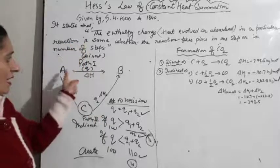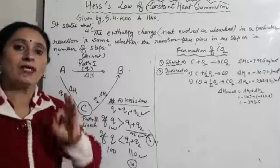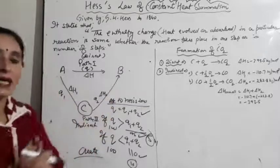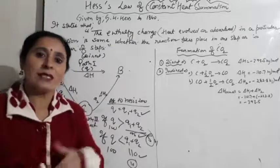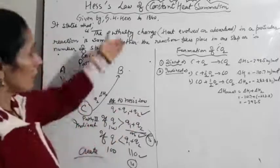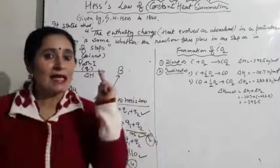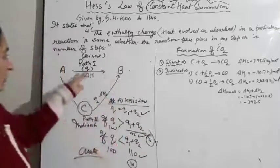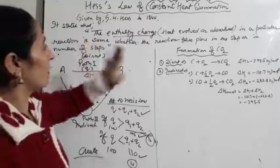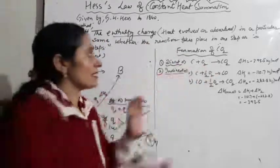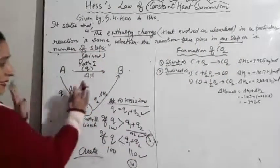According to Hess's Law, the enthalpy change in a direct reaction will always equal the sum total of various enthalpies in the alternative path, whether the reaction takes place in one step or more. The definition is: the enthalpy change (heat evolved or absorbed) in a particular reaction is the same whether the reaction takes place in one step or in a number of steps.